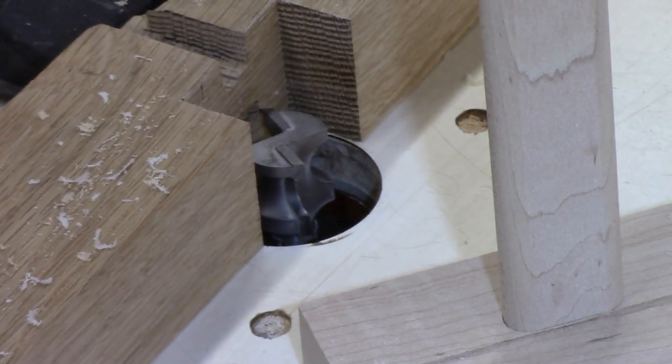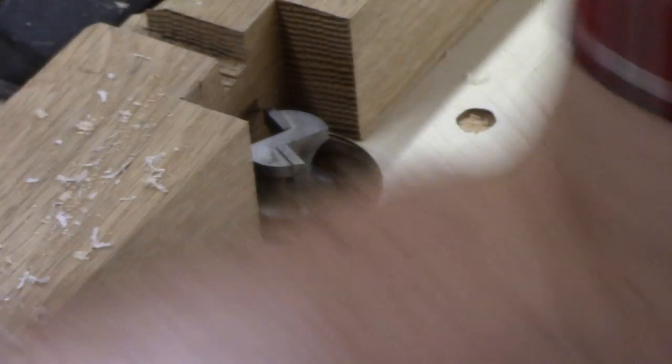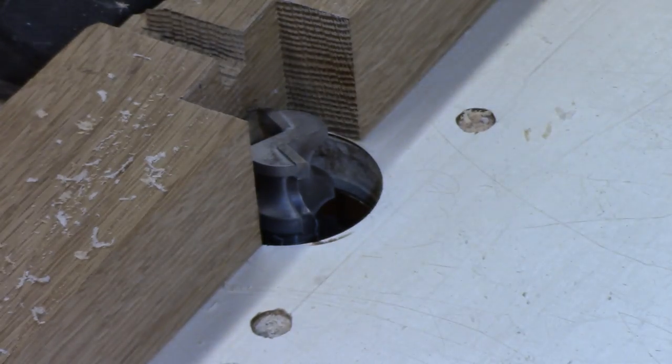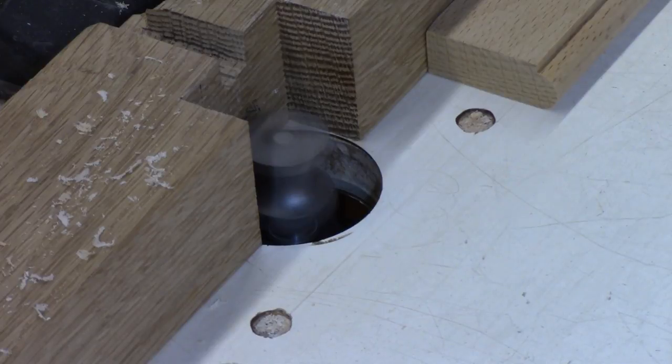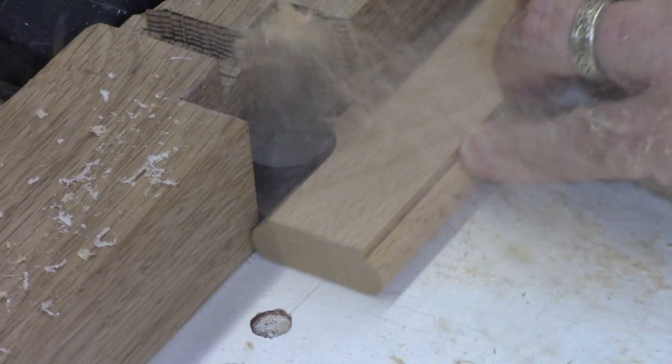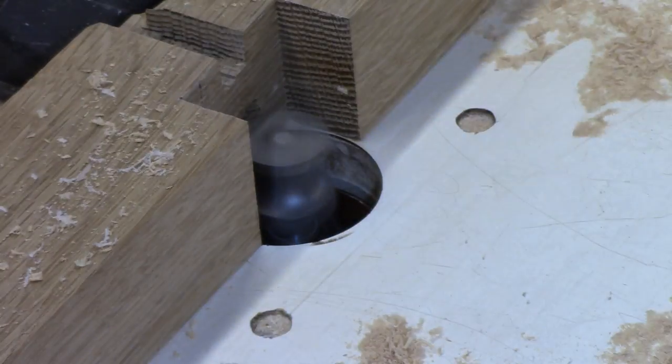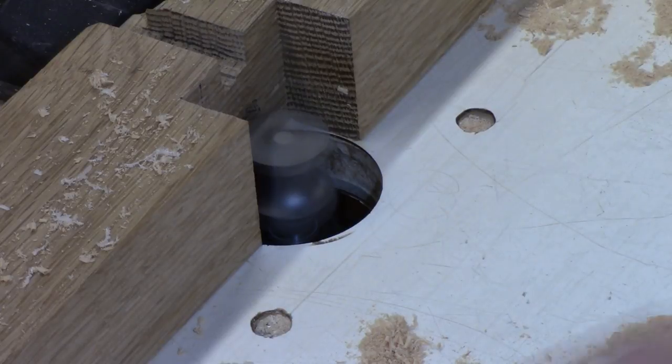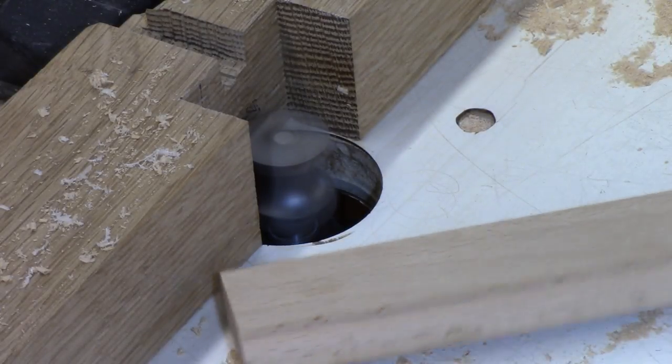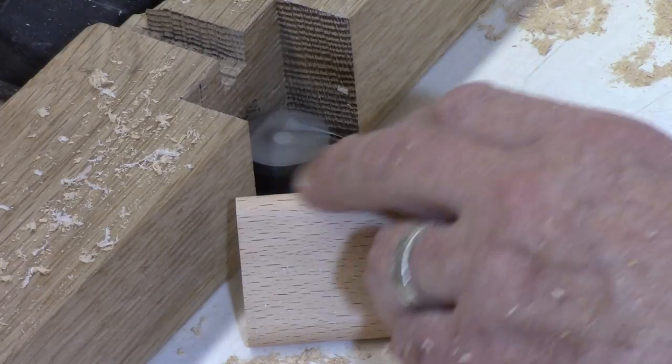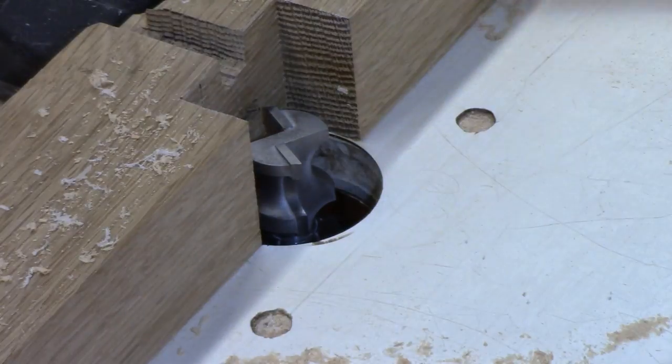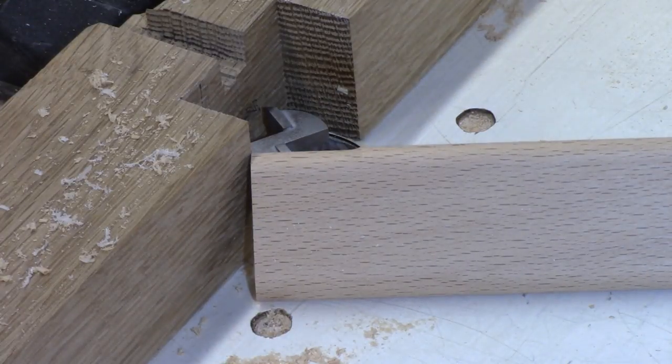Now, if the fence is too far back, I just want to show you this. If the fence is too far back, you'll get a snipe. You can see that little scallop there. Now, that's a pretty severe one. It was pretty loud, but usually it's much more gradual than that.